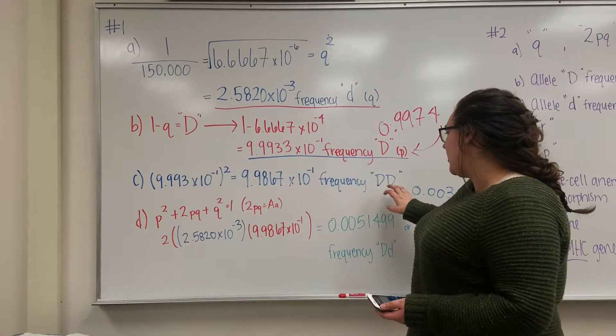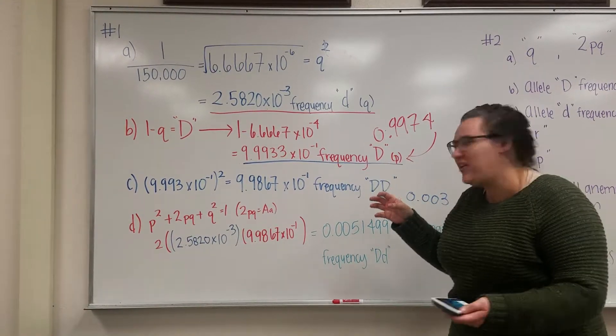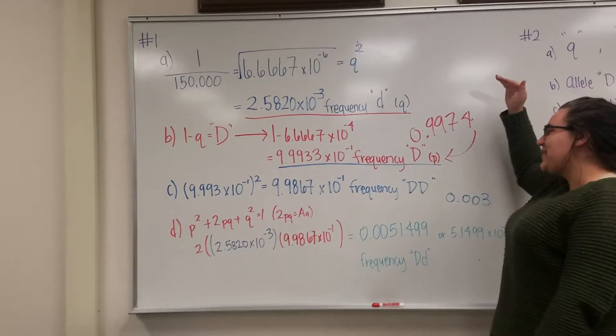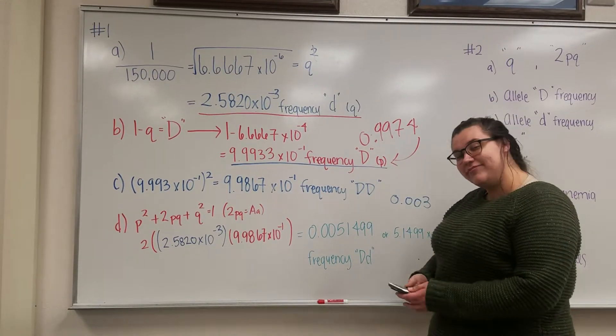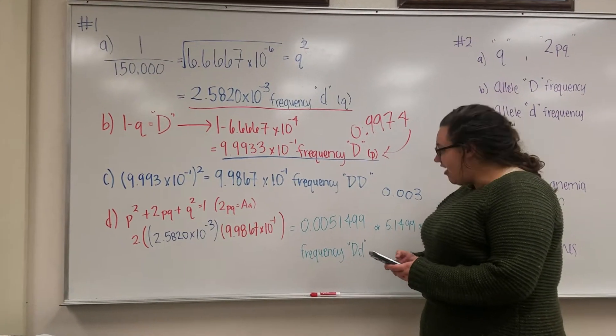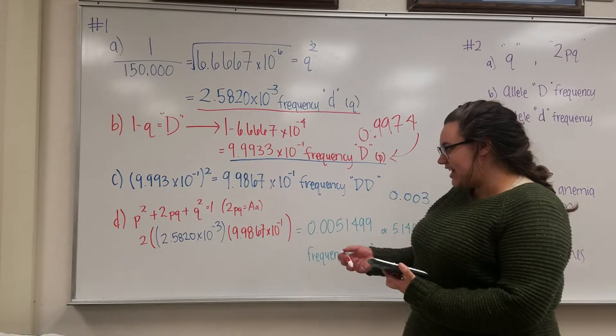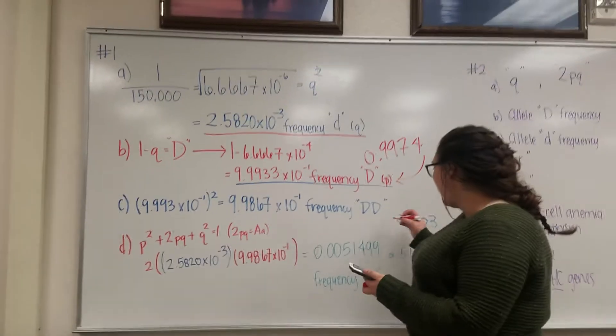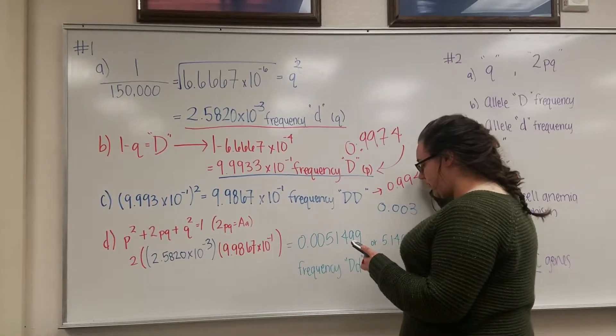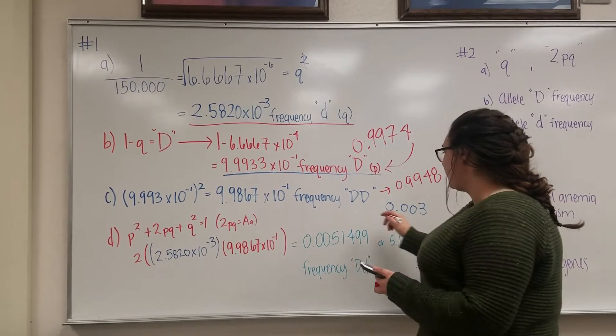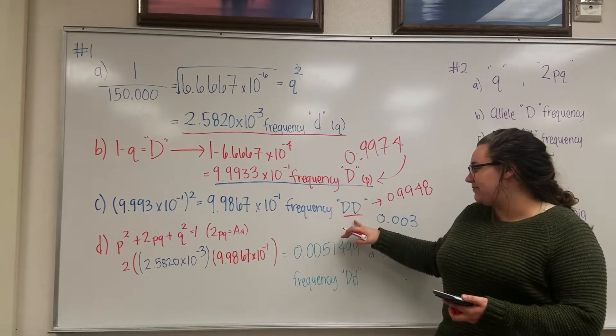Then we have, so we want to find the frequency of homozygous recessive. Dang it, I did that one wrong too! Dadgum! Okay, so because we know the frequency of just 1 dominant allele, we just have to square that so that we get 2. That's math, kids. Which would be point... Dadgum, I messed this whole thing up. 0.9948 for the frequency of homozygous dominant allele.